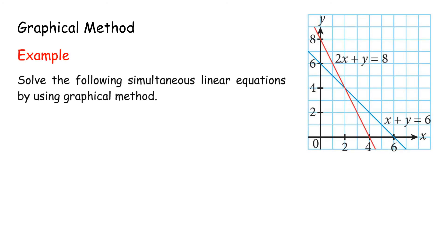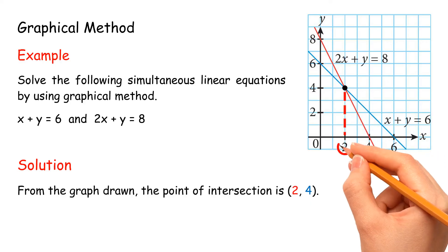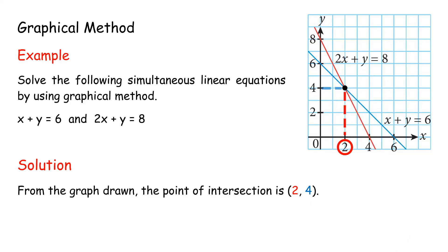Graphical method example: solve the simultaneous linear equations x + y = 6 and 2x + y = 8 using the graphical method. Solution: from the graph drawn, the point of intersection is (2, 4). Thus the solution is x = 2 and y = 4.